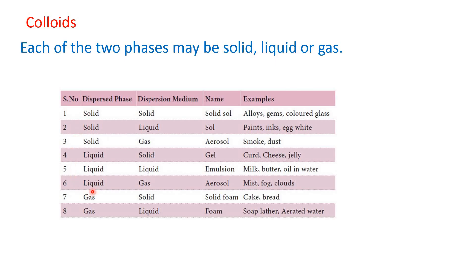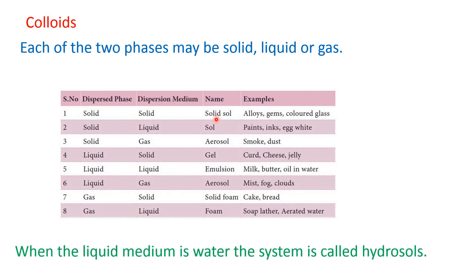Similarly, when the dispersed phase is liquid and the dispersion medium is gas, that is also aerosol — for example, mist, fog, clouds. There are so many varieties. And if the dispersion medium is water, then the sol is known as hydrosol.